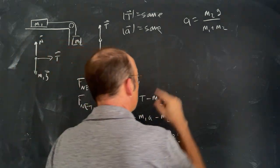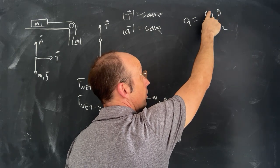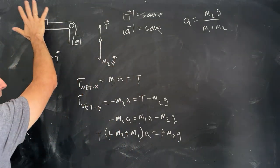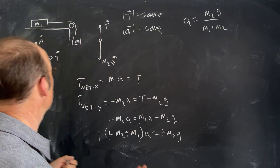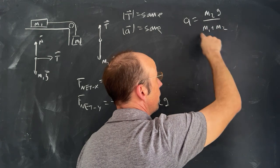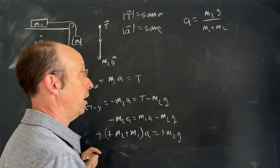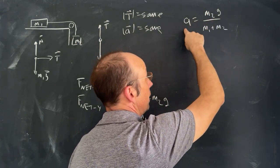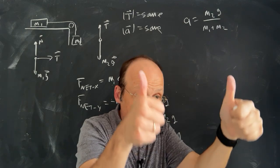Let's do a couple of checks. The units of a should be meters per second squared — we get g times kg divided by kg, so the units work. What if M1 is enormous? Then the tiny M2 wouldn't make it accelerate, so we should get zero — and indeed, a very large M1 in the denominator drives a to zero. What if M2 is giant? Then M2 on top essentially equals M2 on bottom, and we get an acceleration of g. That's a double thumbs up.